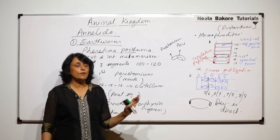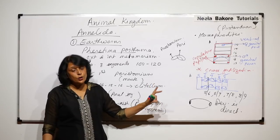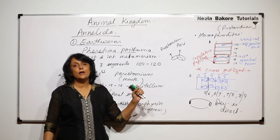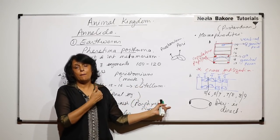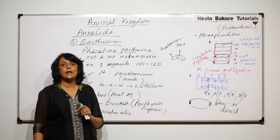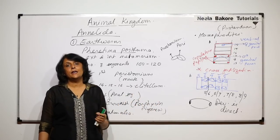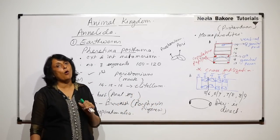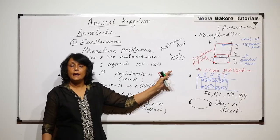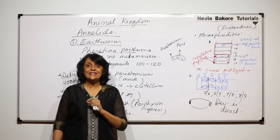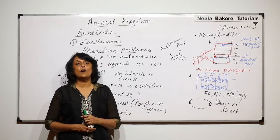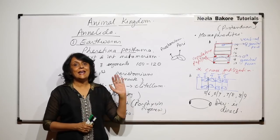Earthworms can be ammonotelic or ureotelic depending on their environment. If they are in water-rich areas they are ammonotelic; on land they are ureotelic. This applies to all examples of Annelida. For the elimination of nitrogenous waste they have nephridia, which can be integumentary, septal, or pharyngeal.